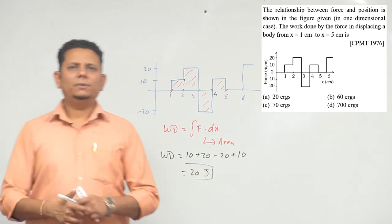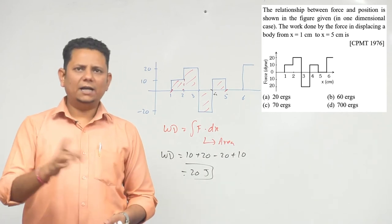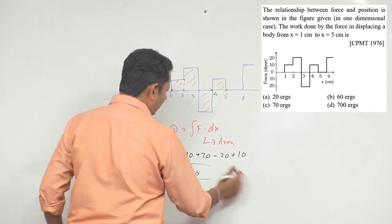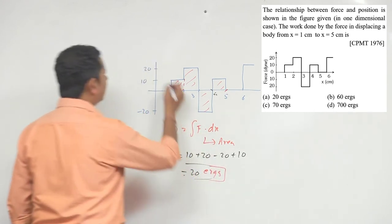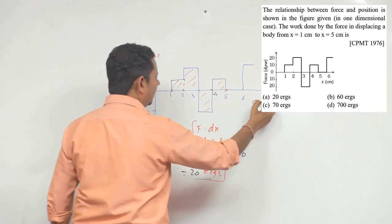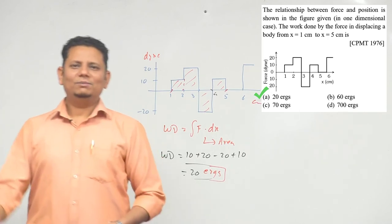In this case, the dimension - our force is in dynes and this is in centimeters, so instead of joule, our answer will be in ergs because our units are in CGS. So this is dyne and this is centimeter, so based on this we can say 20 erg, option number A would be the right answer.